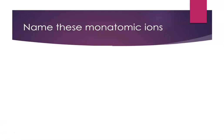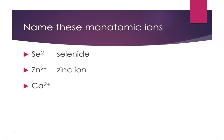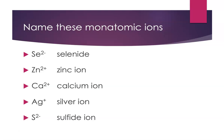Let's do some practice naming monatomic ions. Se²⁻ — selenium is the element, but as the anion it's selenide. Zn²⁺ is the zinc ion — a Type 1 cation. Ca²⁺ is the calcium ion; we don't need to indicate the charge because we know it. Ag⁺ is the silver ion. S²⁻ is the sulfide ion — the anion ending changes to -ide. And N³⁻ would be the nitride ion — notice the -ide ending for anions.